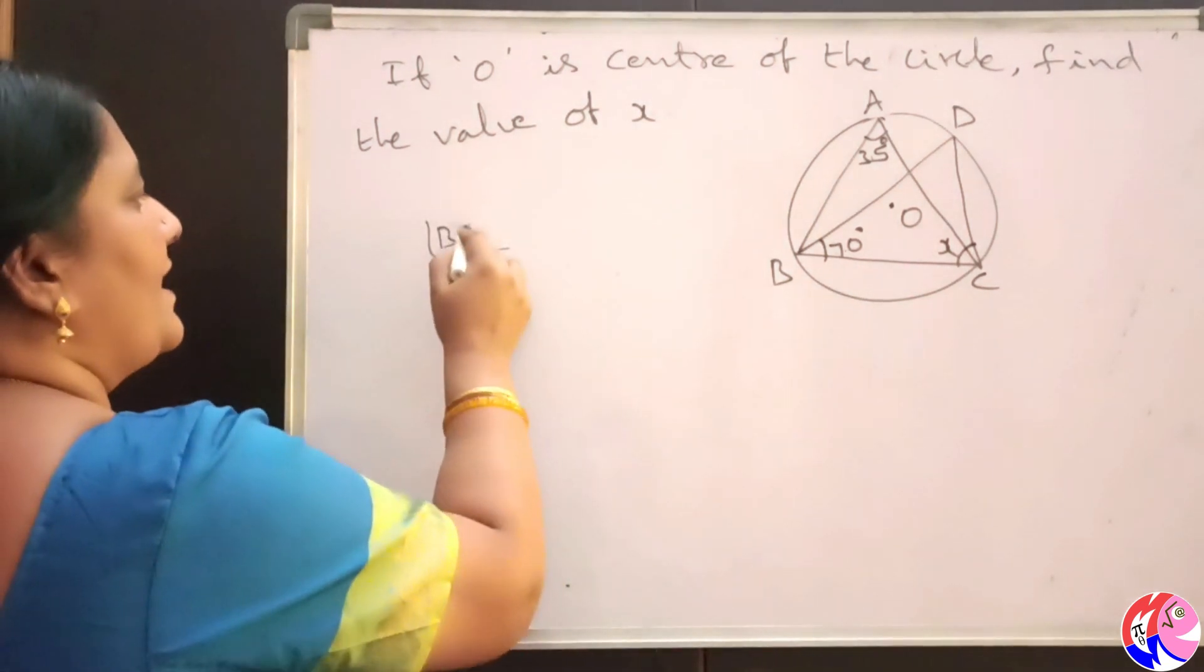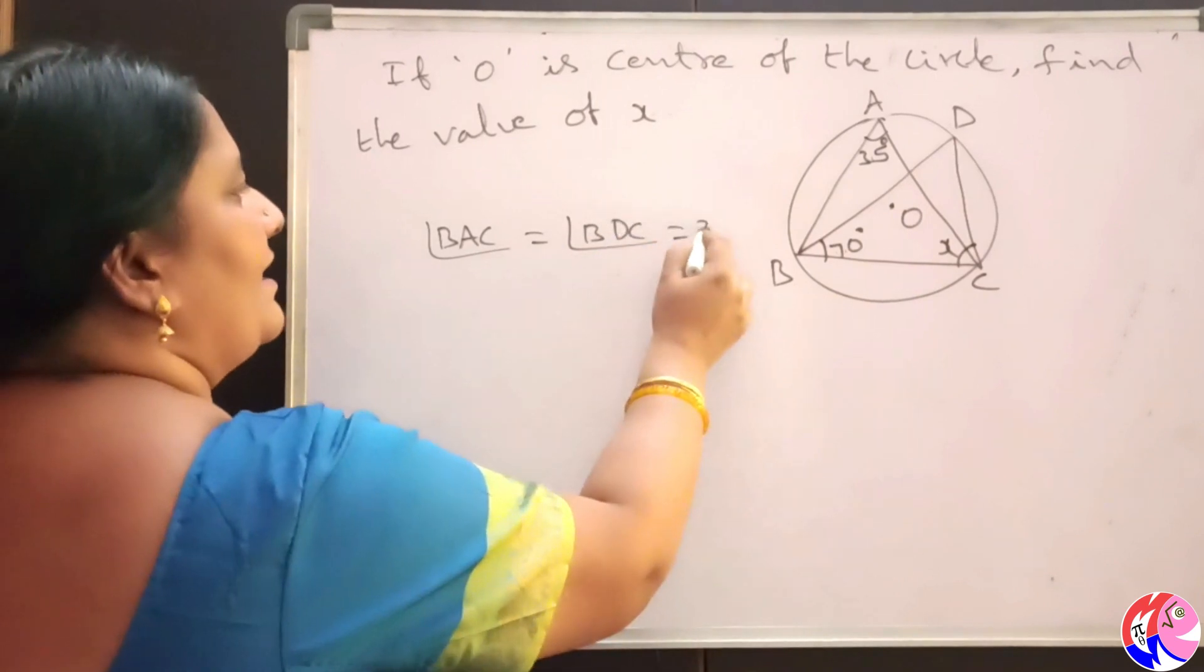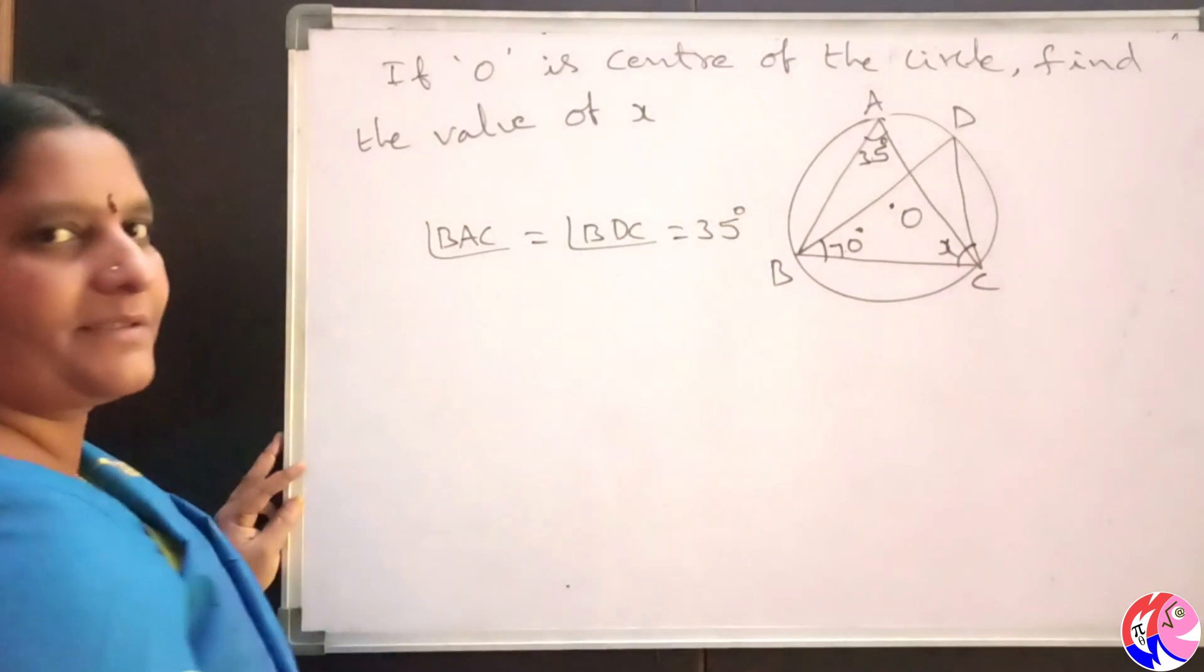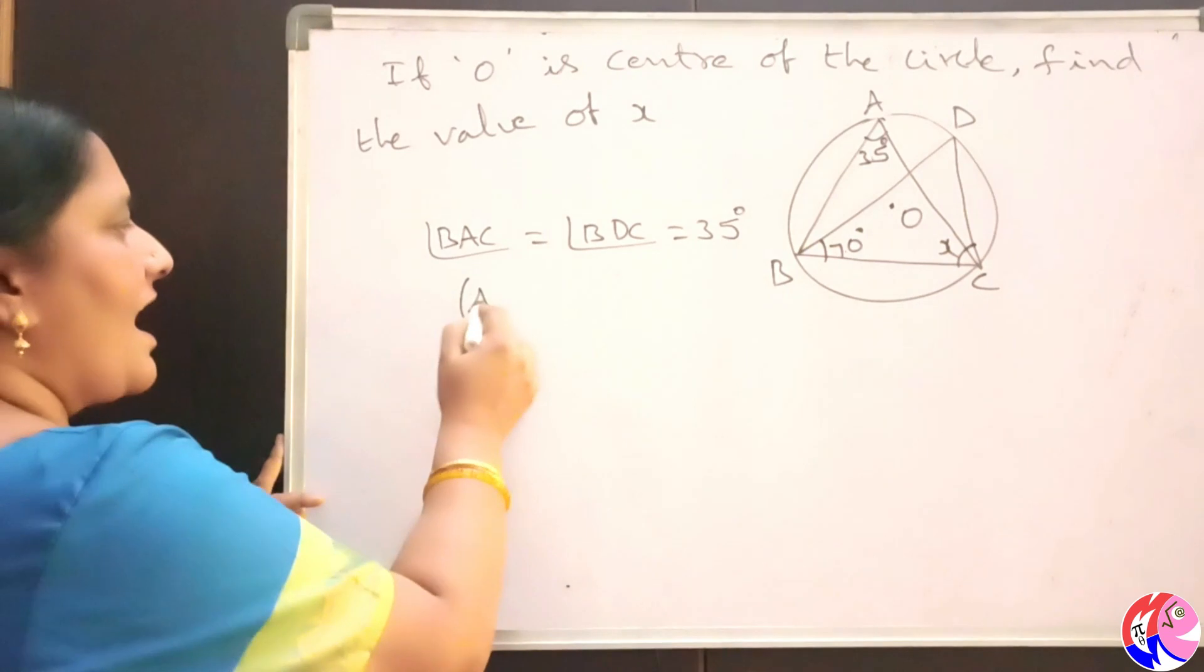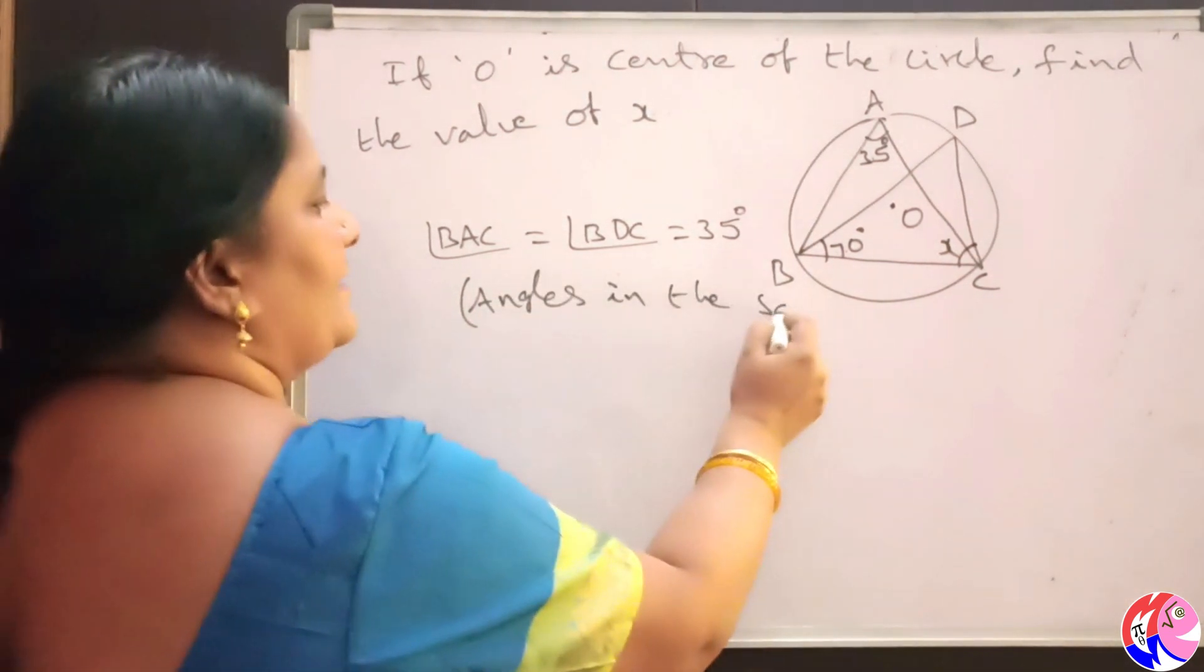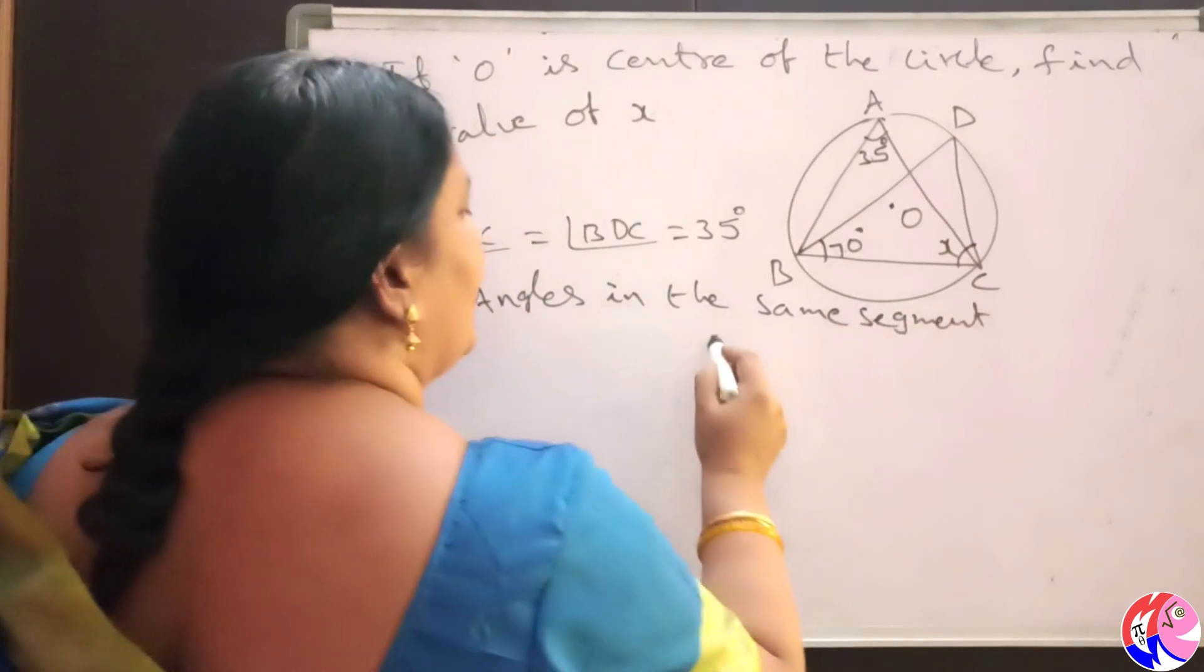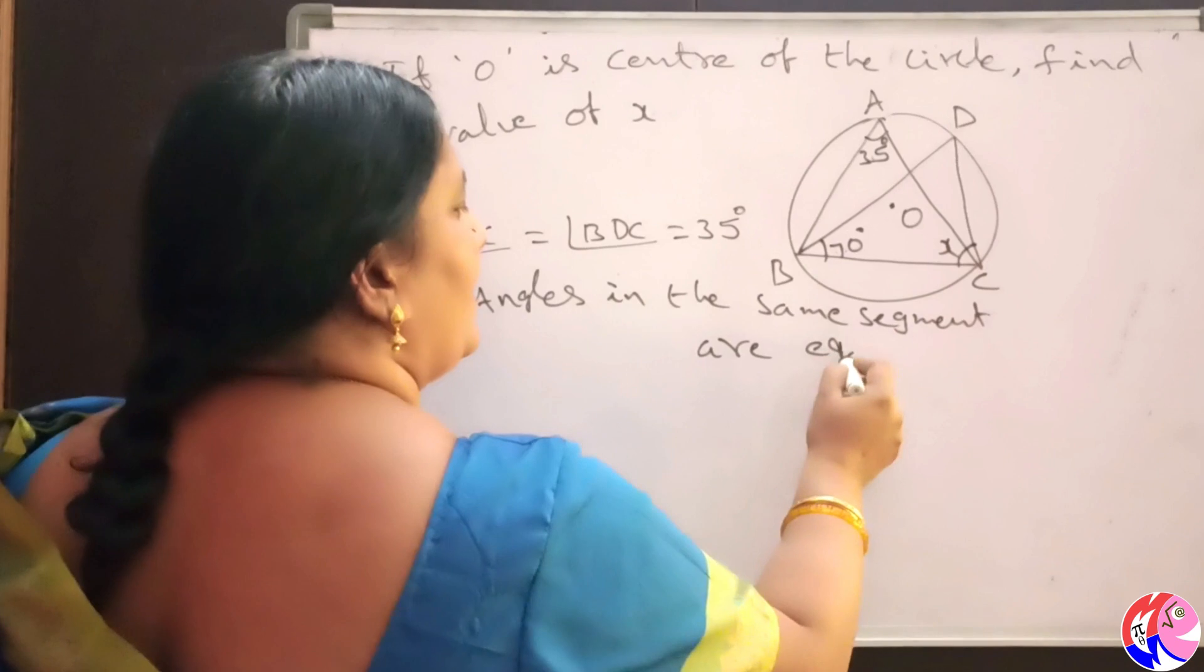So, angle BAC is equal to angle BDC is equal to 35 degrees, due to the reason angles in the same segment are equal.